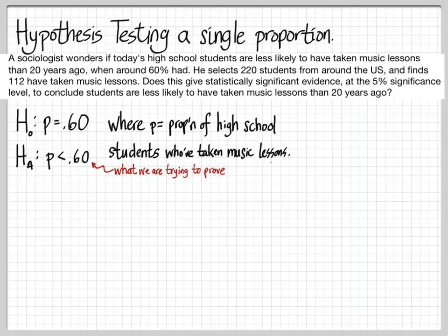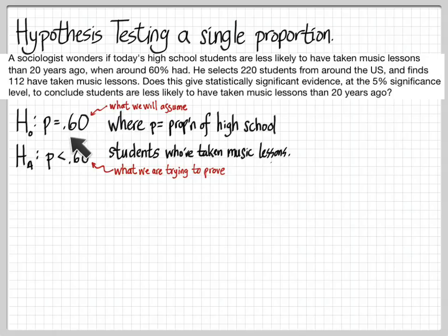We are trying to prove the alternate hypothesis — we want to show it's less than 60%. What we're going to do is assume it actually hasn't changed. The reason we do that is we're going to compute some probabilities. We want to be able to numerically evaluate whether this 112 out of 220 is so far from what we'd expect, if there had been no change, that we can reject that null hypothesis. We need to assume something — in this case, we're going to assume that p is still 60% so that we can actually compute probabilities. Without making that assumption, we're just guessing.